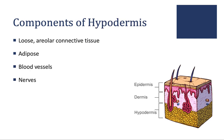There are four main components of the hypodermis. First, it is generally made up of loose areolar connective tissue as its base. Mixed in with that connective tissue is a large amount of adipose, or fat, which helps cushion and insulate. Blood vessels and nerves are also present — it is well vascularized, with a lot of blood vessels and nerves. And that is a very quick overview of the hypodermis.